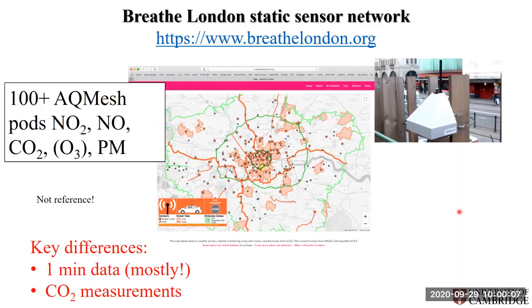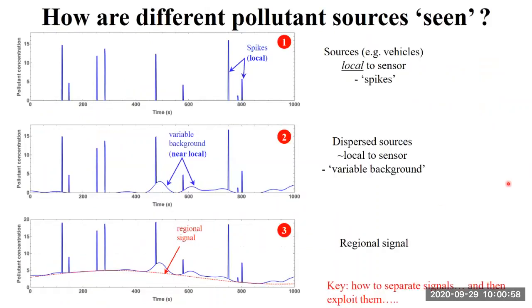Before we delve into that, I'm going to briefly talk about the BRETT London static sensor network. We are using about 100-plus AQMesh pods measuring NO2, NO, CO, ozone in about a dozen of them, and also PM. Here is a picture of the AQMesh and here is a map of the location of the sensors within greater London. The key difference between this network and every other network out there, especially the reference network, is that we are using one-minute data in most cases, and we also have CO2 measurements. Including CO2 and making this high-resolution type of measurement is key to a new concept of data analysis which looks at the emission ratio — how different pollutants are seen.